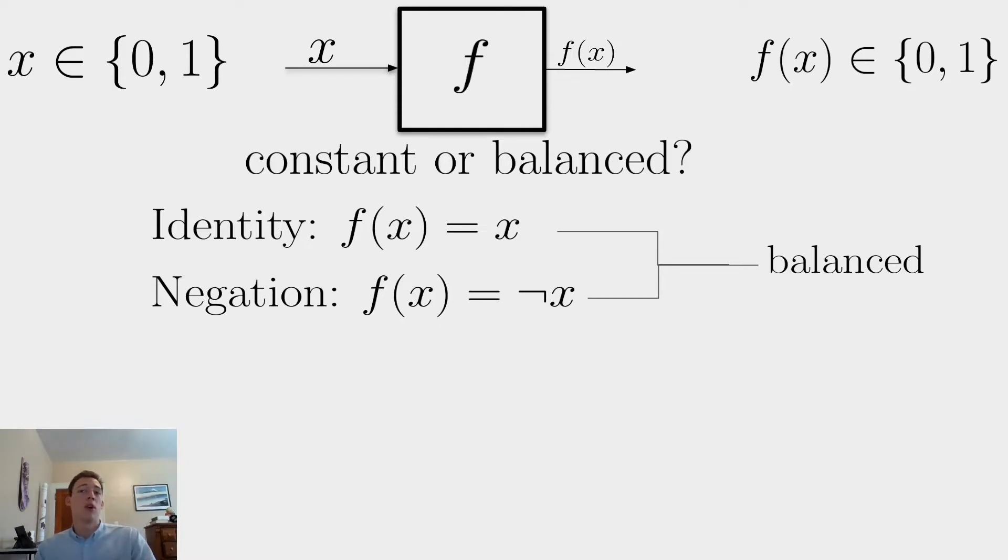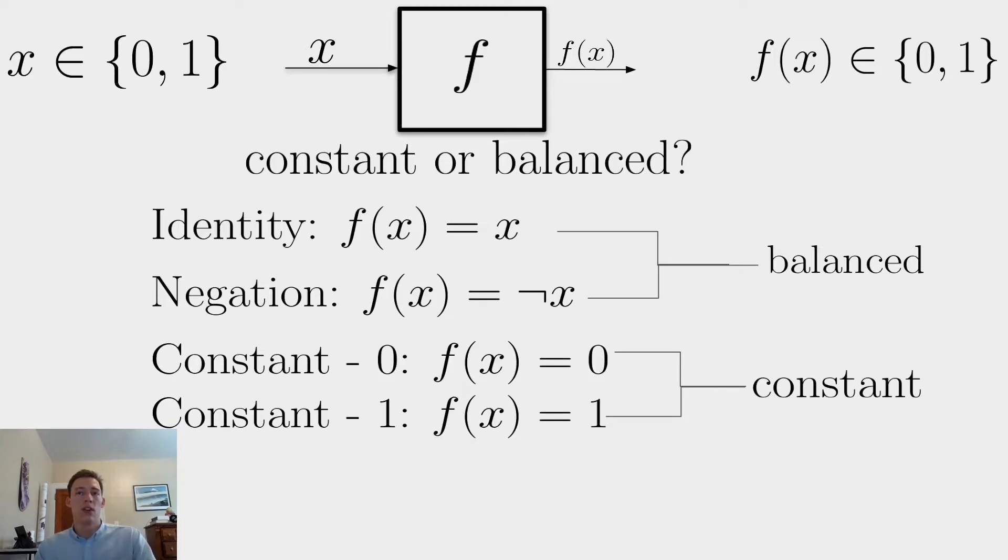Then there are two possible constant functions as well. These are constant zero and constant one. They just kind of do what they sound like. f(x), if it's constant zero, is always going to return zero. And if it's constant one, it's always going to return one. So these form our two possible constant functions.